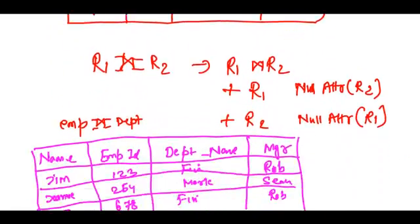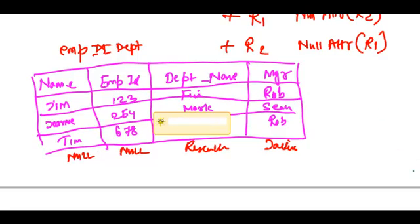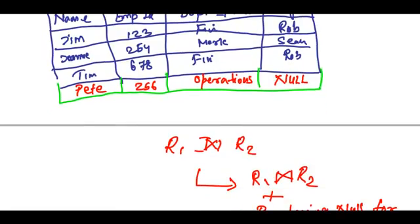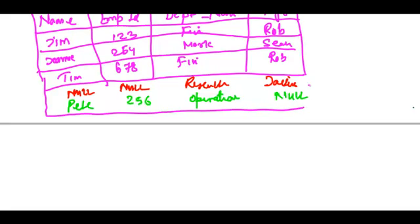It would have the results regarding Jackie and research: Jackie, research, null, and null. And it would also have the results for Pete — Pete, 256, operations. This is the result of the full outer join of employee and department.